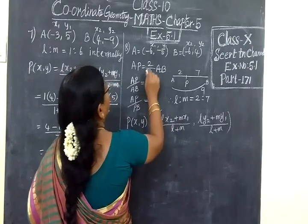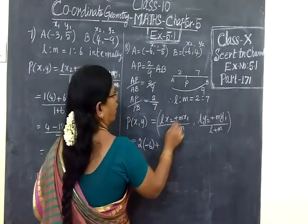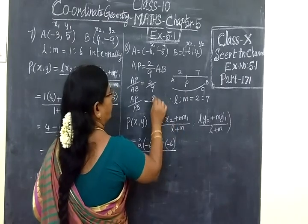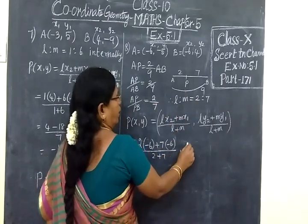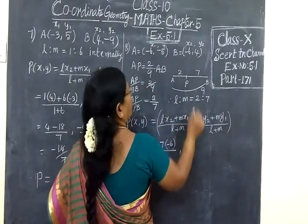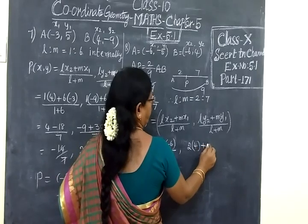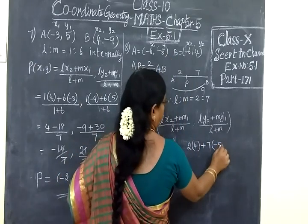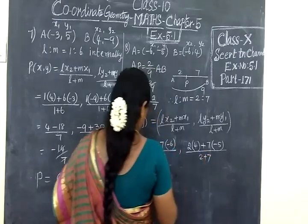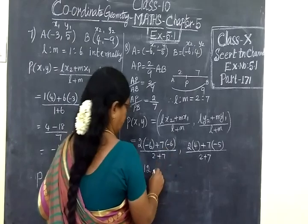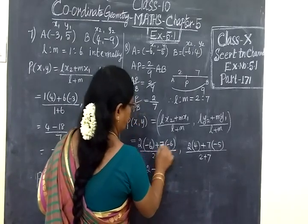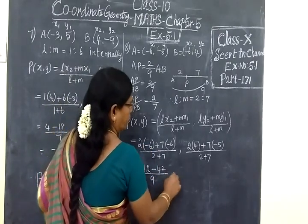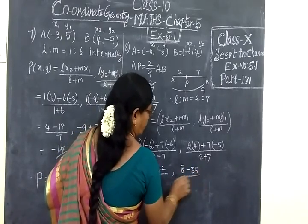L is 2. That is X2 minus 6 plus M 7. X1 minus 6, by L plus M: 2 plus 7. Then L is 2, bracket Y2, plus M 7, bracket Y1 minus 5. Write it carefully. Equal to minus 12, then minus 42. Press into minus. Minus. By 9. Then 8, minus 35, by 9.